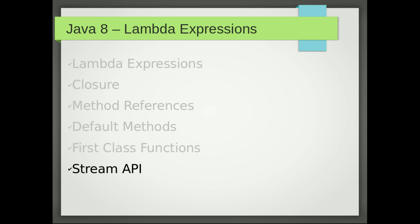Stream API. Lambda expressions are good, but stream API is great. This is what makes lambda expressions much more useful. It may change the way you think and the way you program, and it will give you much more pleasure when you program. Finally, examples. I'll give quite a few examples and try to make it as practical as possible, so it won't be just a hello world kind of example.